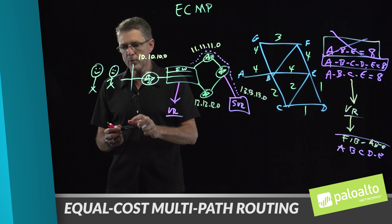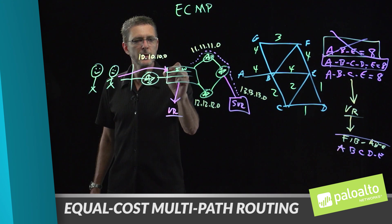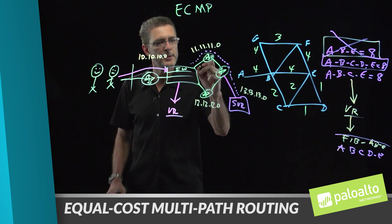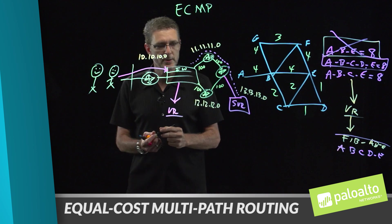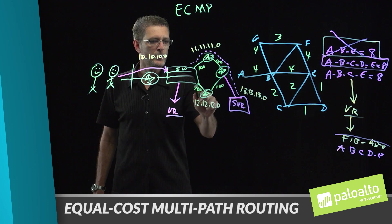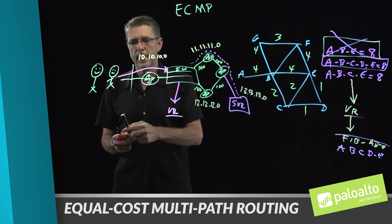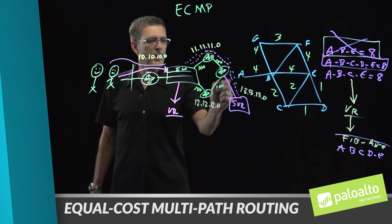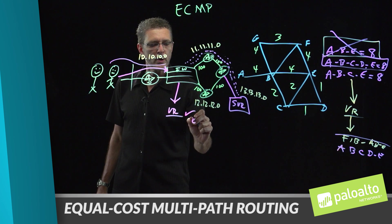By enabling equal cost multipath routing, we need to decide how to load balance across multiple links. The firewall gives you four different options. As a packet arrives at the firewall and we have two equal cost 100-megabit links connecting to the server, a second user also wanting to connect means the firewall must decide how to load balance. Going into the virtual router and enabling equal cost multipath routing allows us to use up to four links.